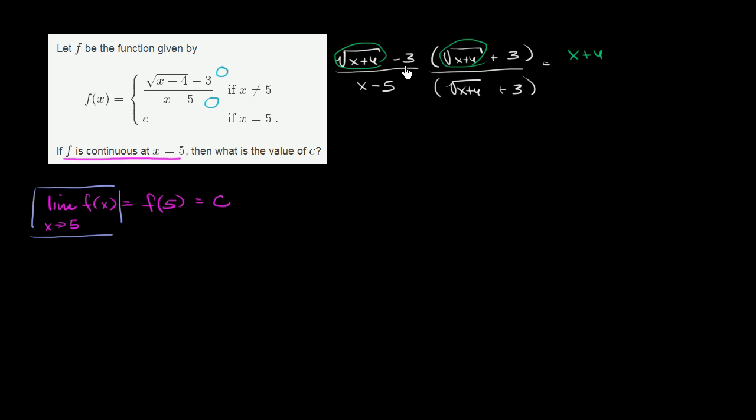And the second term is going to be the second something, or you're going to subtract the second something squared. So you're going to have minus 3 squared, so minus 9. And in the denominator, you're of course going to have x minus 5 times the square root of x plus 4 plus 3.